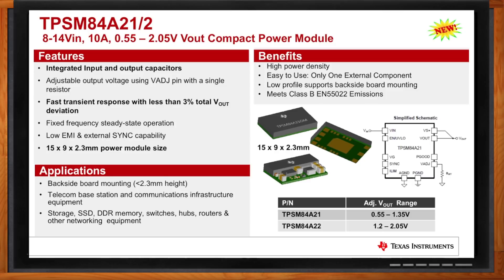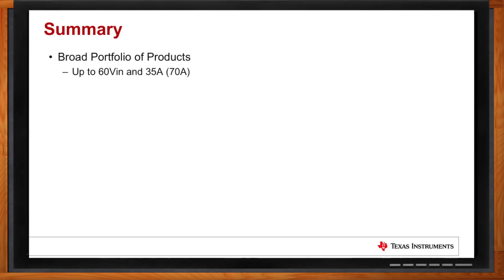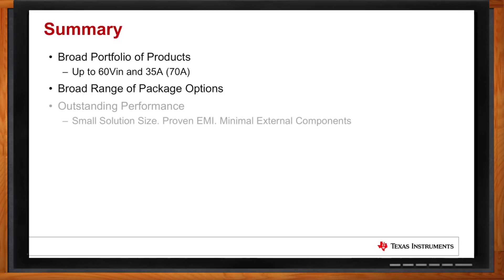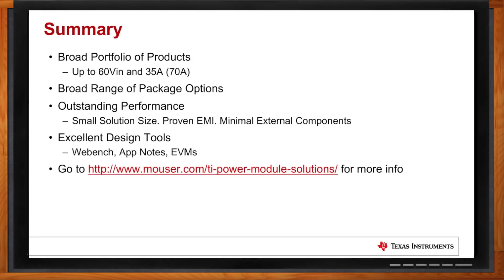To recap: TI has been developing modules for a while with a very broad portfolio — voltages up to 60V, current up to 35A, and stackable up to 70A. There's a unique range of packaging options ideal for different types of systems. Performance is important, including size, EMI, and very few external components. There are also many tools — web tools, app notes, and EVMs — to make it easy to use TI's products.